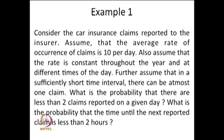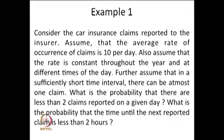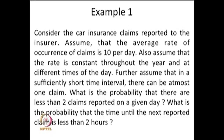Further assume that in a sufficiently short time interval there can be at most one claim. If you think of a very small interval like 1 minute or 5 minutes — very small compared to the rate of 10 per day — in that sufficiently small interval of time, there is a possibility of only a maximum of one claim being reported. The question is: what is the probability that there are less than two claims reported on a given day?